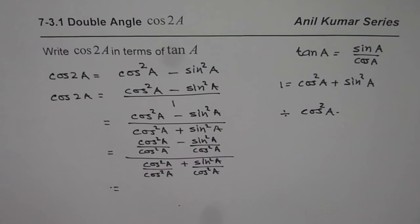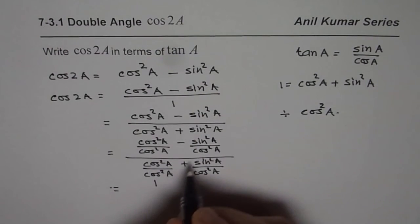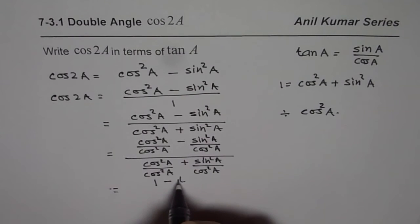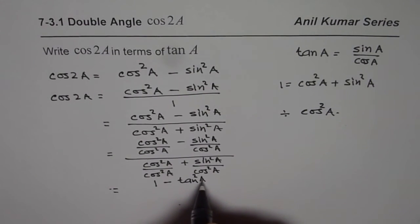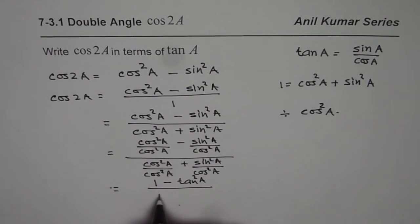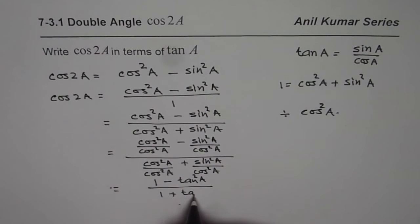So what do we get? Cos²A divided by cos²A is 1. Sin²A divided by cos²A is tan²A. And here again, 1 plus tan²A. Do you get that?